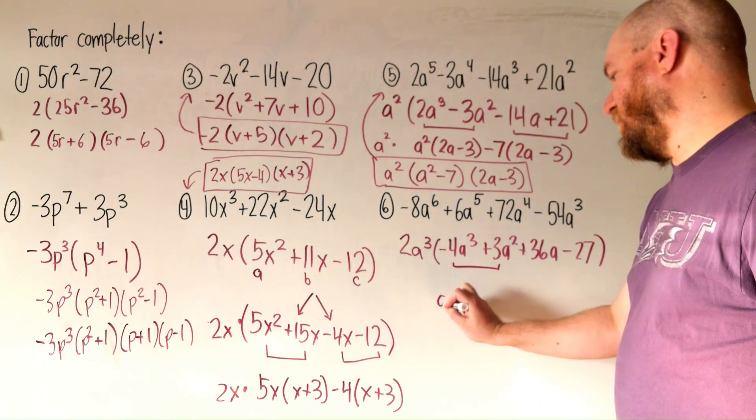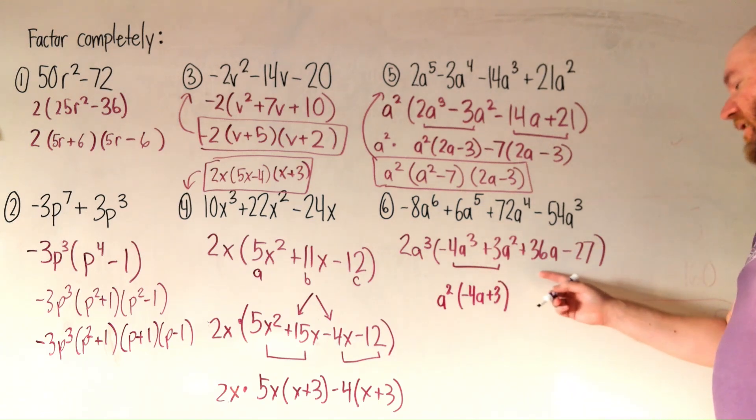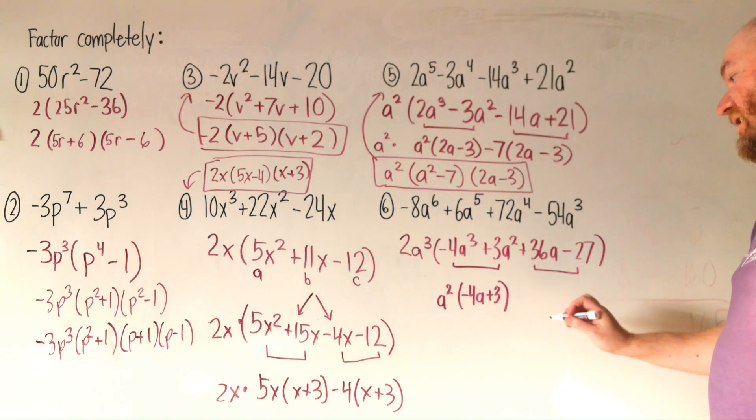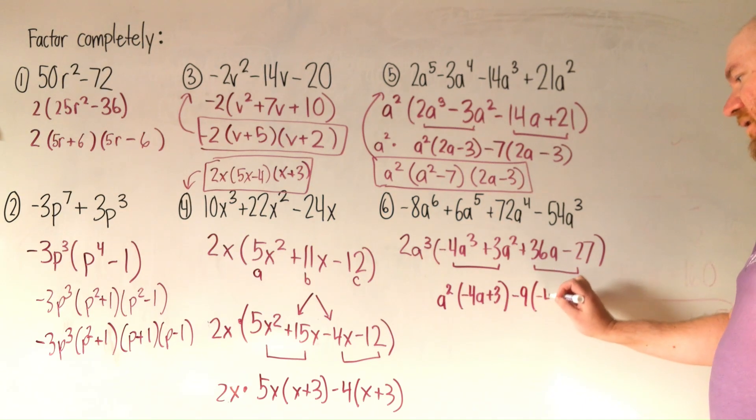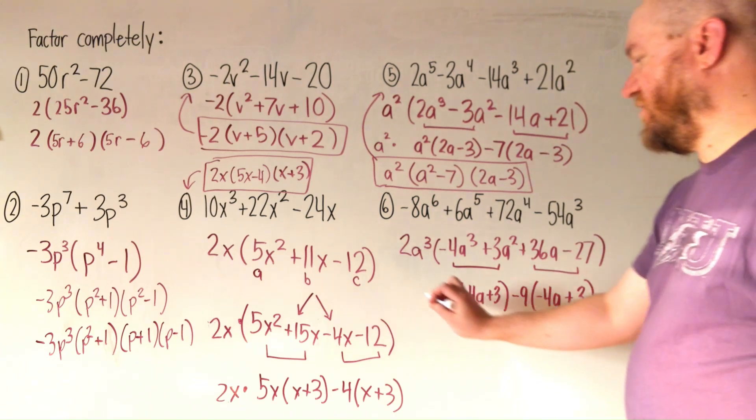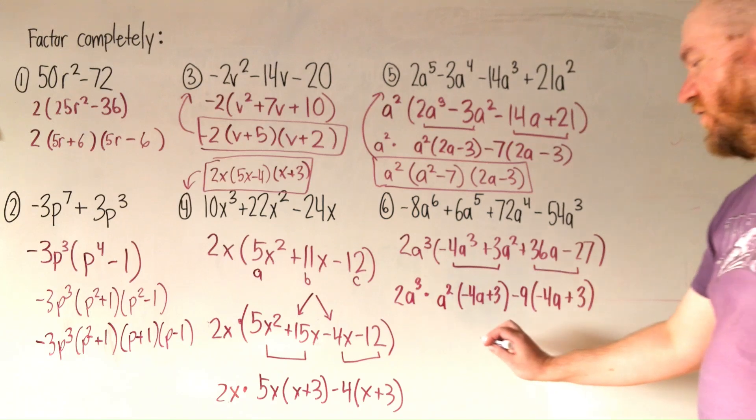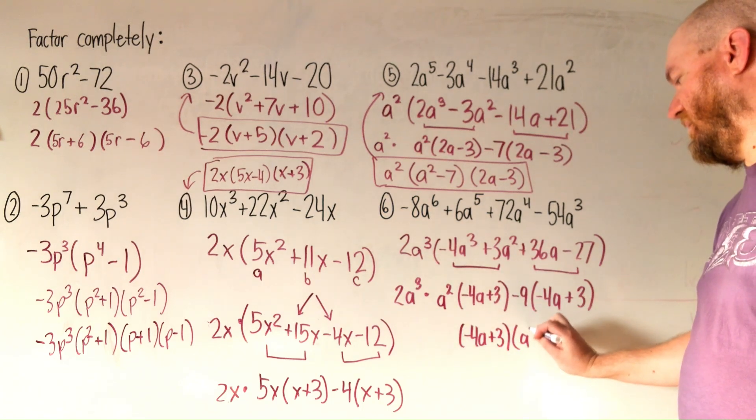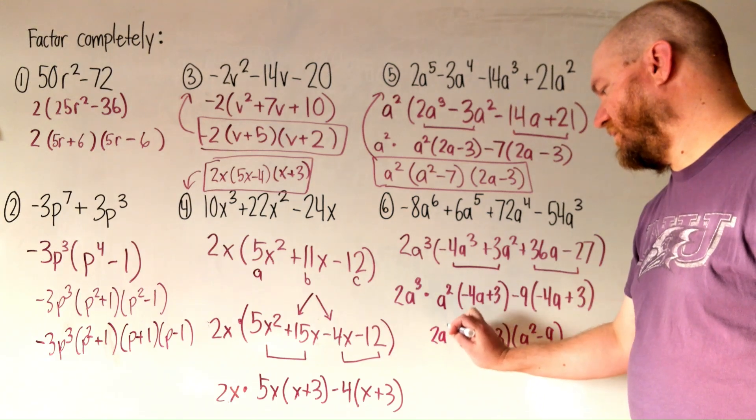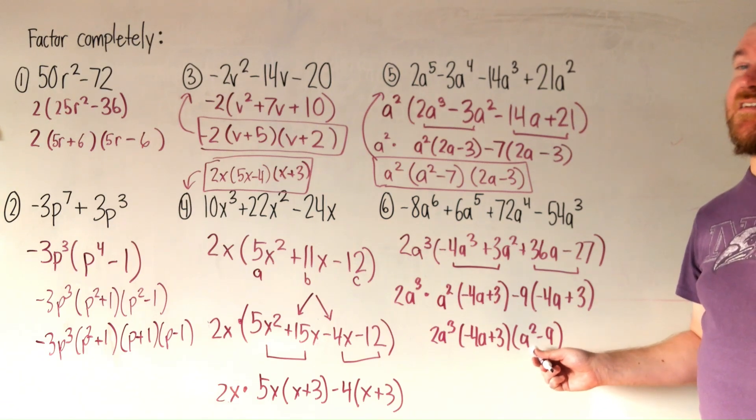And when I take that out, I'll get negative 4a plus 3. And when I factor those two, the GCF of those two is 9. And let's make it a negative 9, because I want this to be a negative 4a and I want this to be a positive 3. And then this 2a to the third is just kind of tagging along. And then our factoring by grouping. This is negative 4a plus 3, our stuff in parentheses. Our stuff in front of the parentheses. And then the stuff on the front gets tapped on. And hey, look at that. Our last step here before I box it, a squared minus 9 can be factored again.